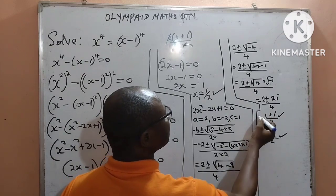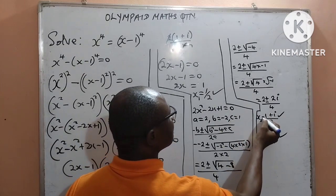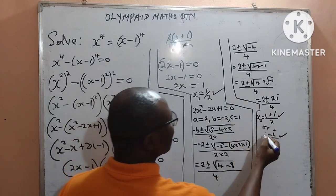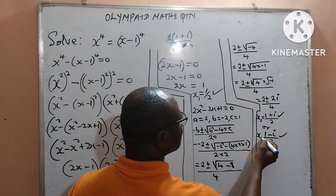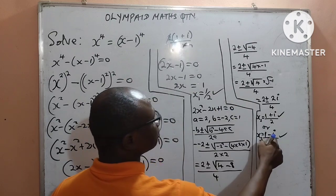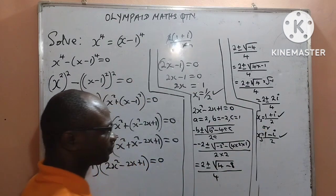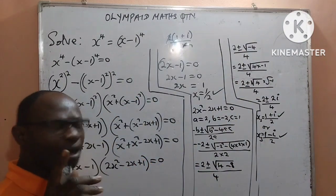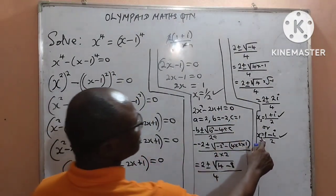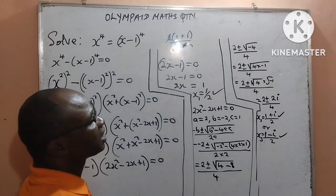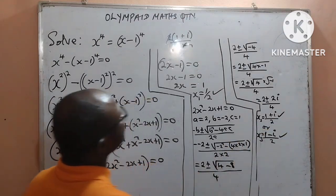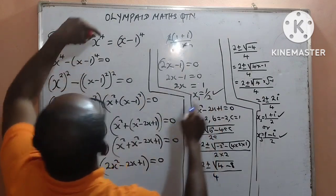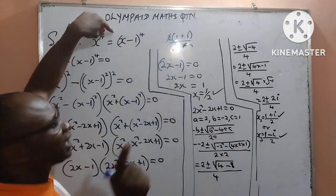So these are the two values of x from the second bracket. The second value of x is 1 plus i, all over 2. The third value of x is 1 minus i, all over 2. And these are our answers. The second and third answers are complex, while the first answer is a real value.